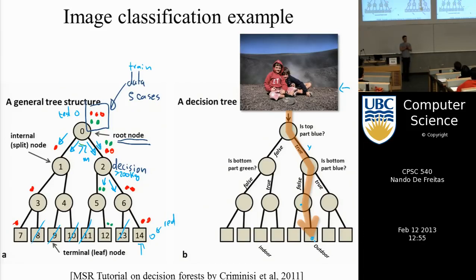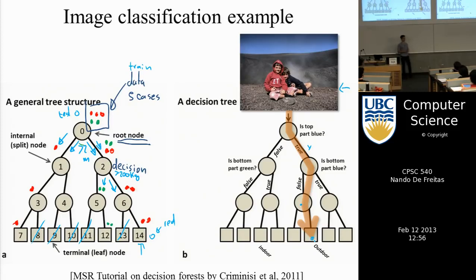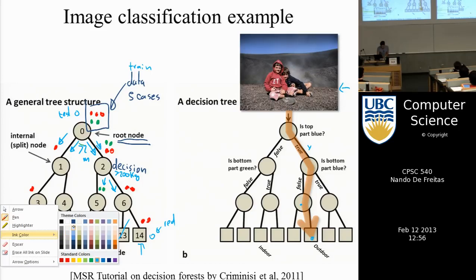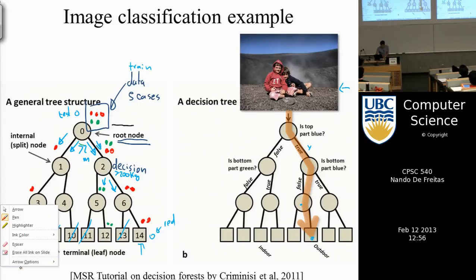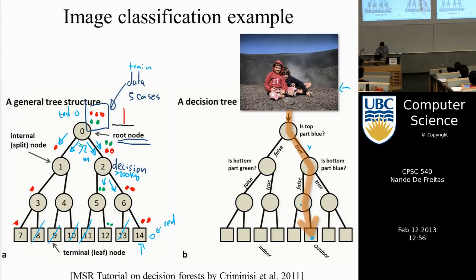We use training data to construct this tree, but once constructed, to reach a decision you just follow the questions, and when you get to the end the class — green or red in this case — is what your neighbors are in that leaf. If everyone in that leaf is red, then you get that class. For each node there is an associated histogram of how many are green versus red out of all the points there.